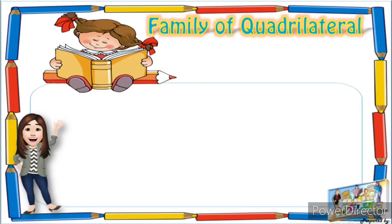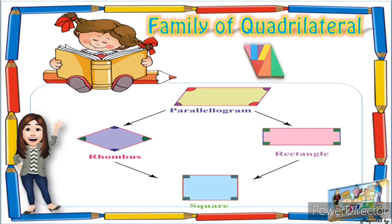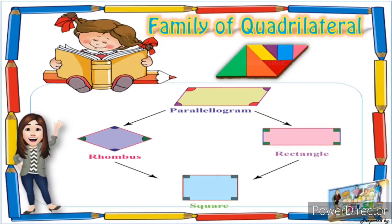I know that you already know what a quadrilateral is from grade 3. Your mathematics teacher taught you that a quadrilateral is a four-sided polygon. We have four kinds of quadrilateral, one of which is the parallelogram. The four are: first, the parallelogram; second, rhombus; third, the square; fourth, the rectangle.